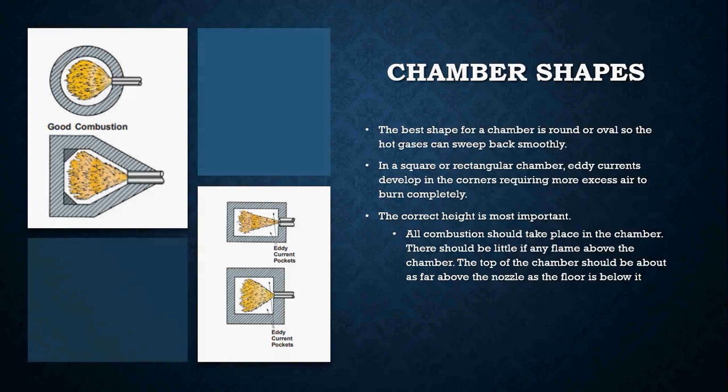The best shape for an oil combustion chamber is round or oval, because of the way air moves around the chamber — it sweeps back more smoothly for a better burn. If a square or rectangular chamber is used, eddy currents can develop in the corners, requiring more air to burn the oil completely. The correct height of the chamber is the most important dimension. All combustion should take place inside the chamber with little if any flame above it.